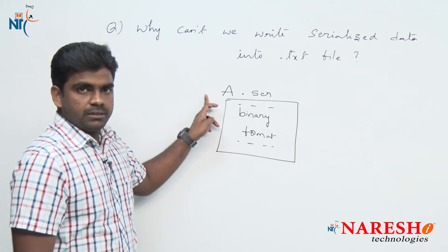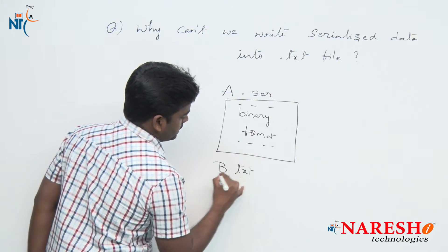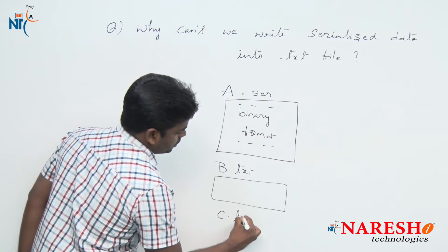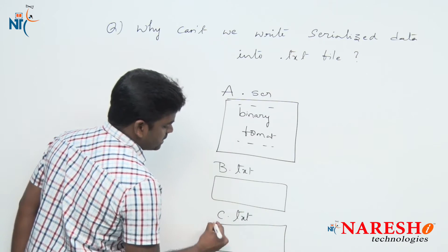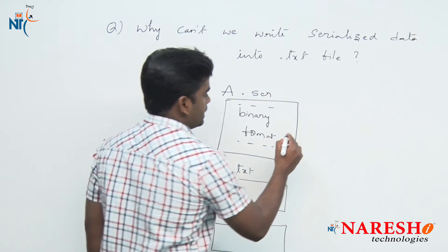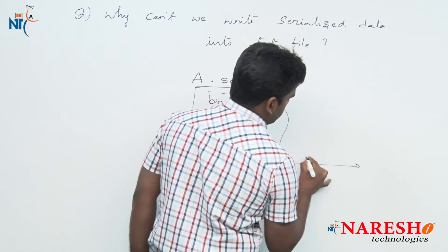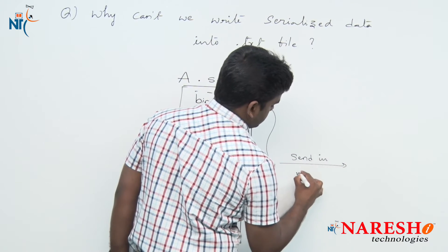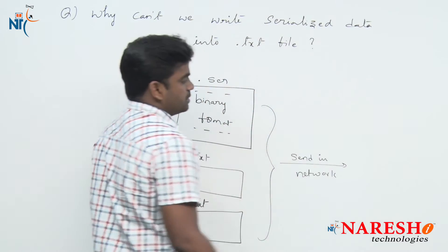Along with that, suppose some text files are also there: b.txt and c.txt. So three files are there. We are sending all these three files in the network, and some other person will receive them.